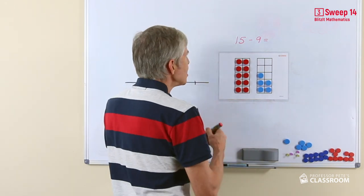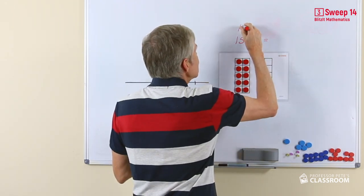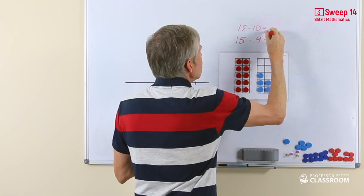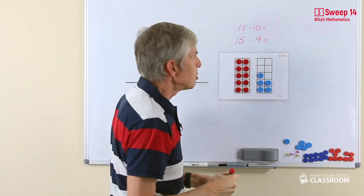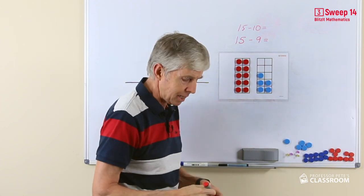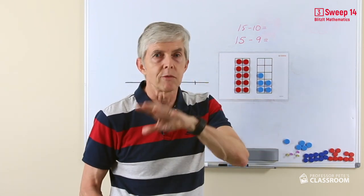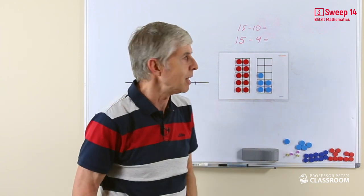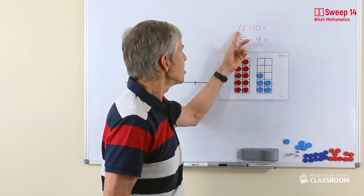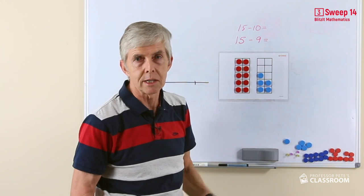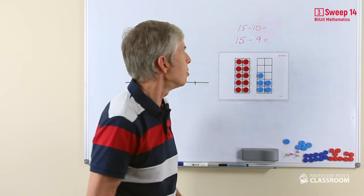We can relate this to the question 15 take away 10, which like other number facts we've talked about before is really a place value question. 15 is made up of a group of 10 and 5 extra ones, that's why we write it as 1, 5 for 15. If we were to take away 10, we're just taking away one digit basically and there's only the ones left and that would be 5.